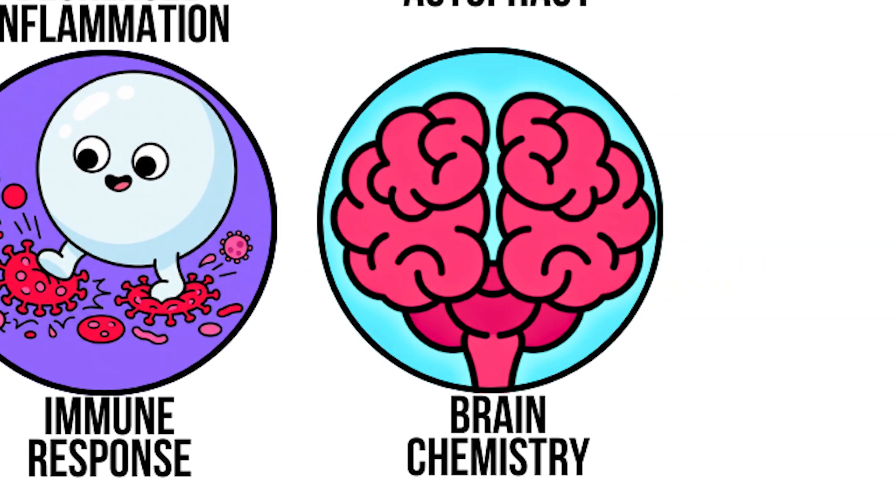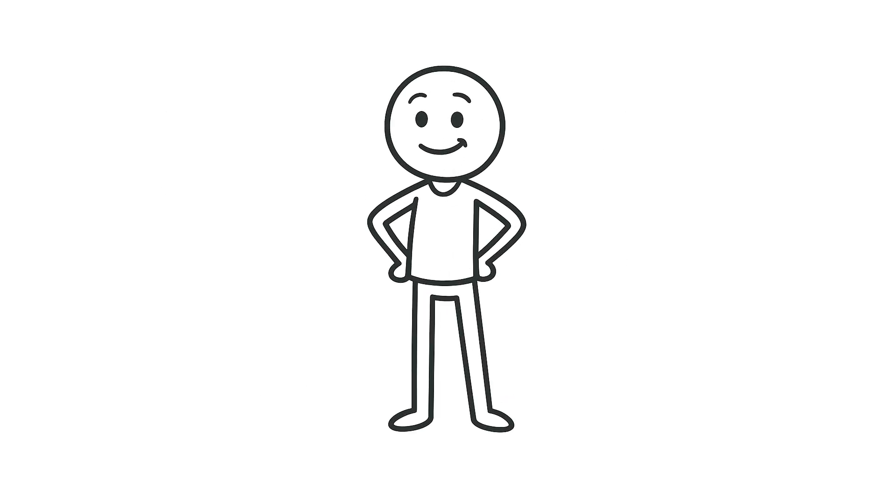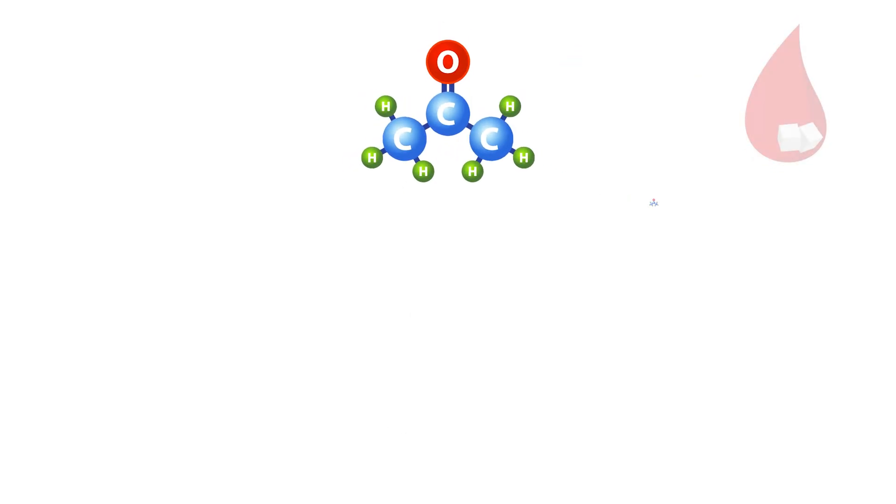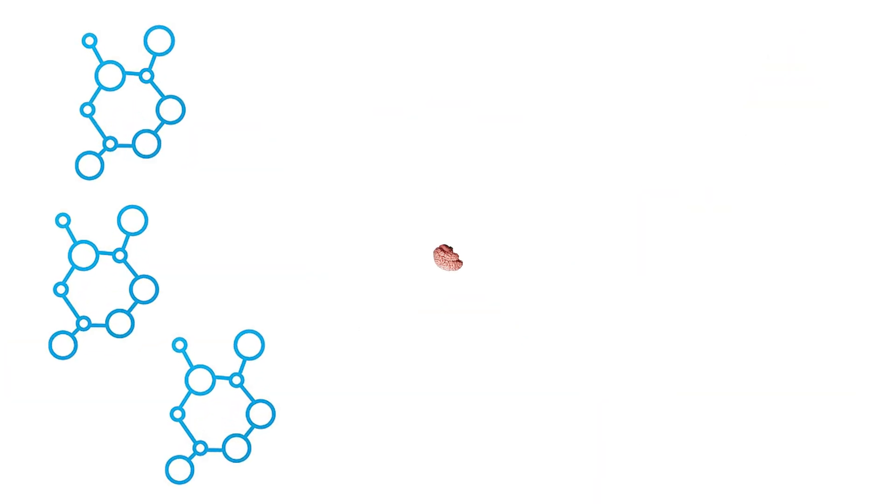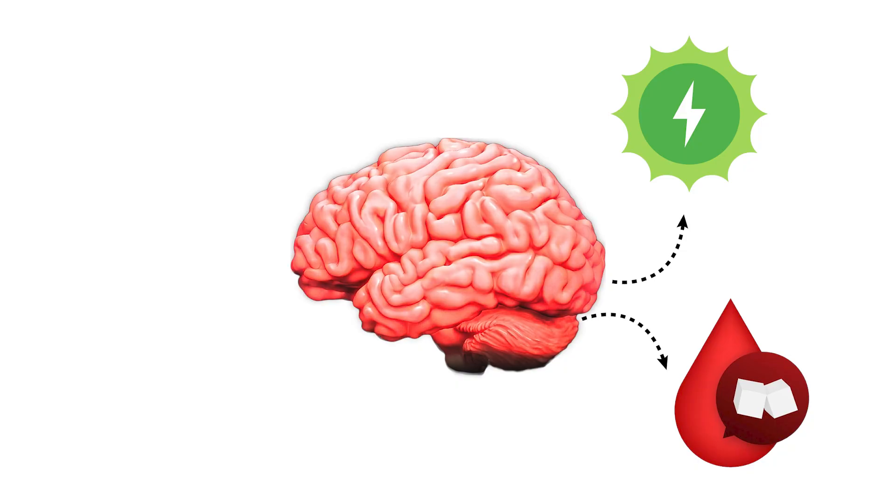Brain chemistry shift. Most people expect to feel foggy and slow after a day without food, but in reality, the opposite tends to happen. When glucose runs low and ketones start showing up, the brain actually runs better. Ketones cross into the brain easily and provide a steadier energy source than glucose, with no spikes and crashes.